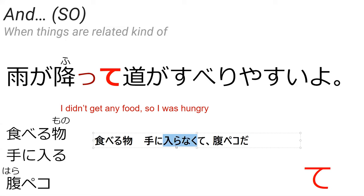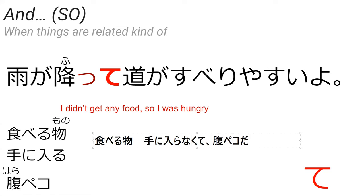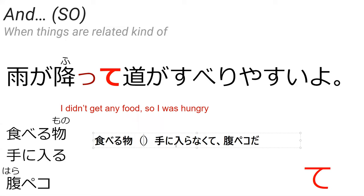My goal for this was hairu in negative form, so hairu becomes haranai. And then nai became nakute to make te-form. What particle do you think taberu mono would get in this context?